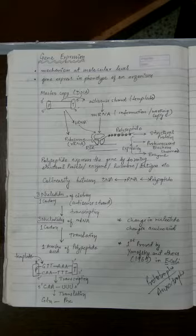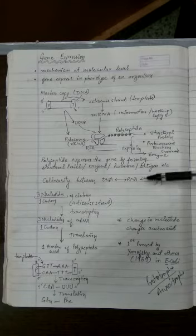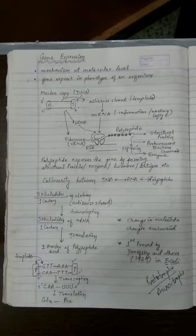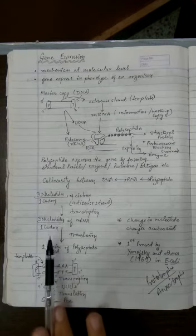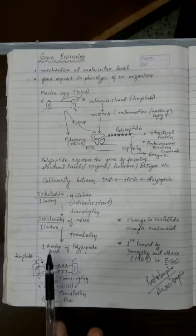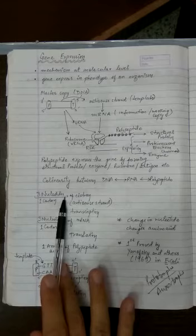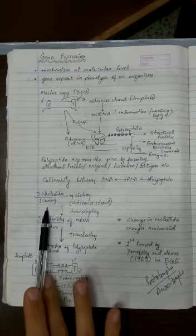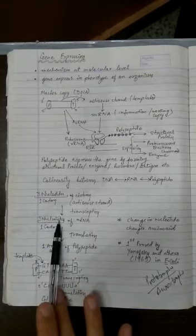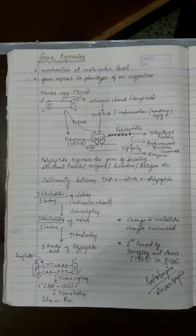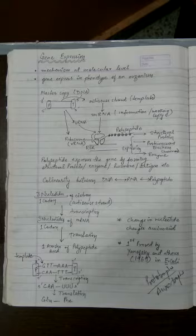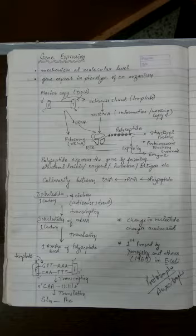We learned the collinearity between DNA, RNA, and polypeptide. One codon of the DNA will code for one codon of the messenger RNA, and that will code for one amino acid. Three nucleotides of DNA or RNA will code for one amino acid. If there are 100 amino acids in a gene, that means there are 300 nucleotides involved or 100 codons involved.